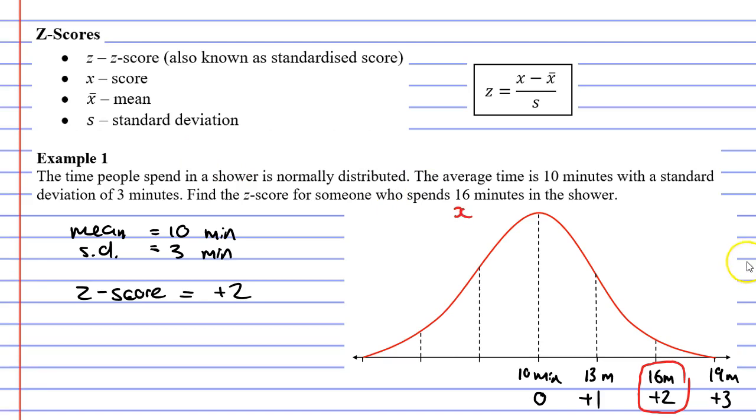Then you can see x̄ (x with a bar above it) - that's the mean. Our mean was 10 minutes. Finally, we've got s at the bottom. s stands for standard deviation, which was 3 minutes.